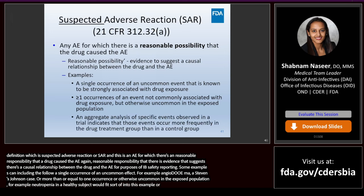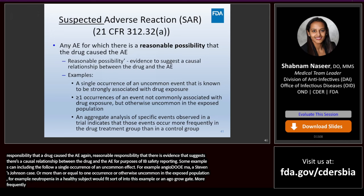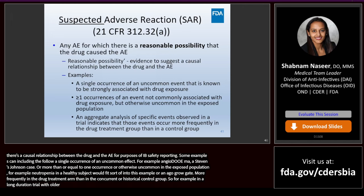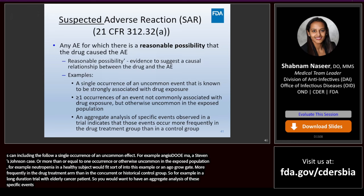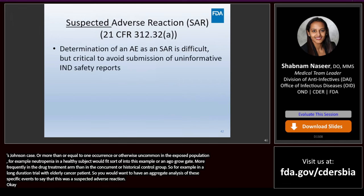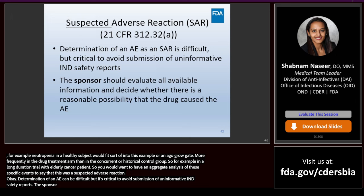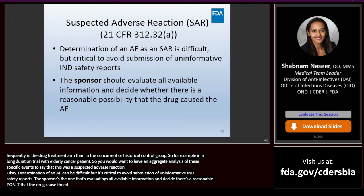Another example of a suspected adverse reaction is an aggregate analysis of specific events observed in a clinical trial indicating that those events occur more frequently in the drug treatment arm than in a concurrent or historical control group — for example, acute MI in a long-duration trial with elderly cancer patients would not be so unexpected, so you would want an aggregate analysis to determine it was a suspected adverse reaction. Determination of a suspected adverse reaction can be difficult, but it's critical to avoid submission of uninformative IND safety reports. The sponsor is the one that evaluates all available information and decides whether there's a reasonable possibility that the drug caused the AE — this is the sponsor's primary responsibility.